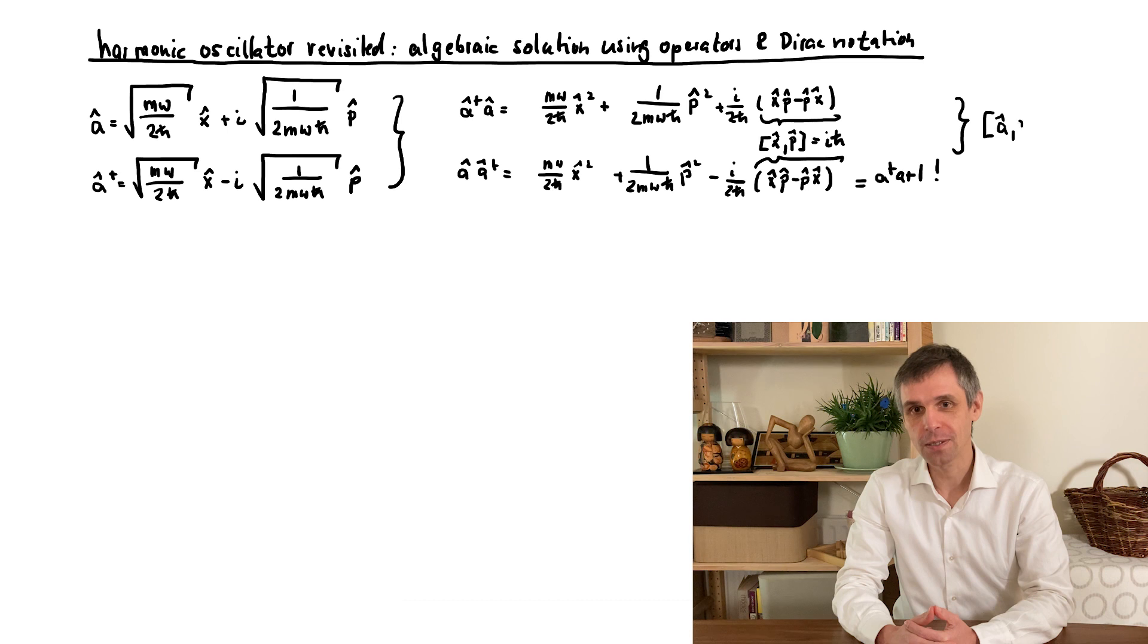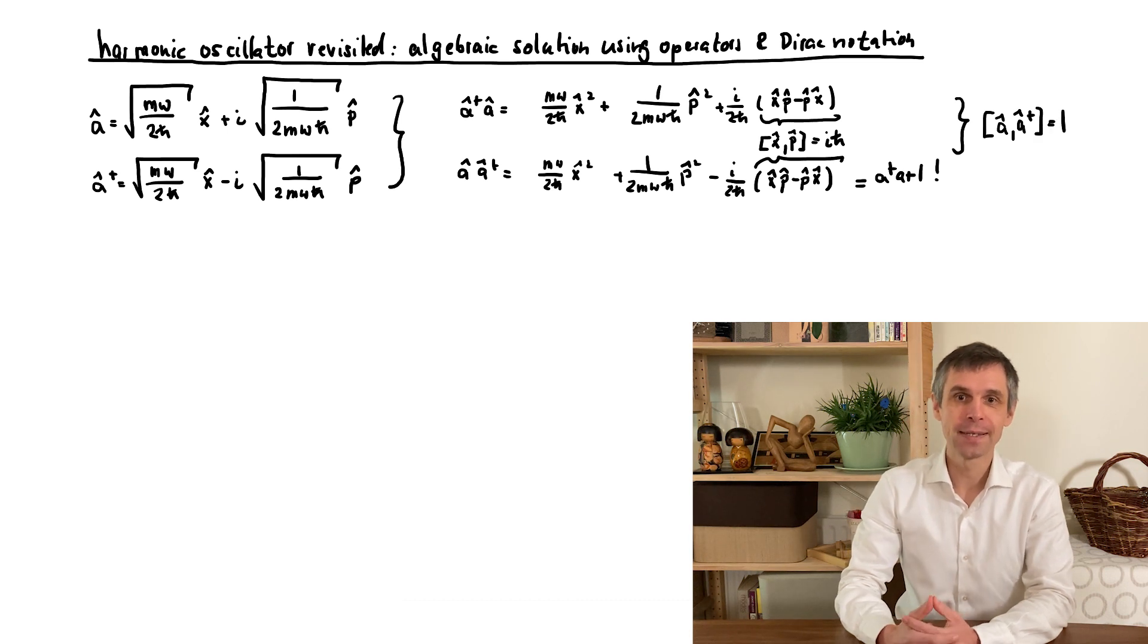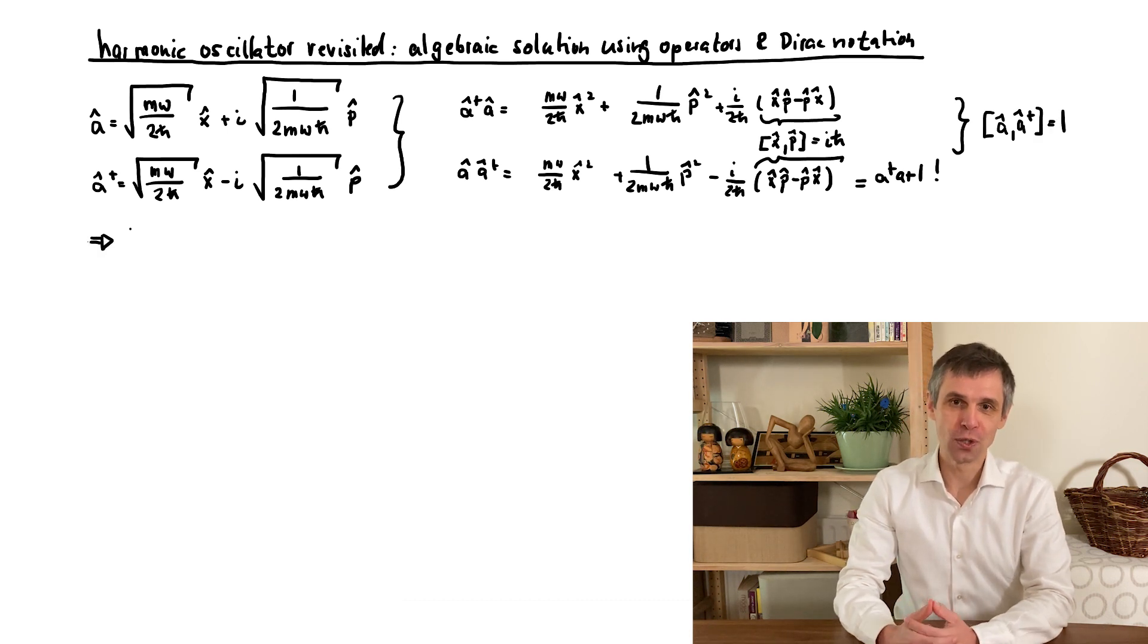So we get two features out of this. The commutator of these two new operators, which just turns out to be one, and a new way to write the Hamiltonian.